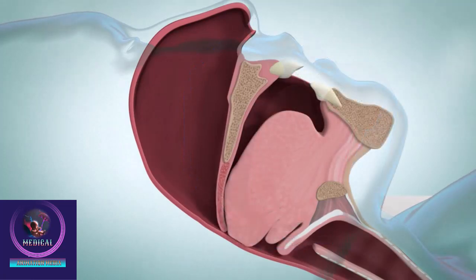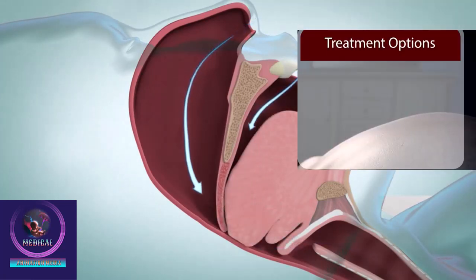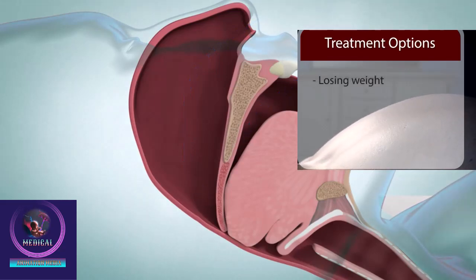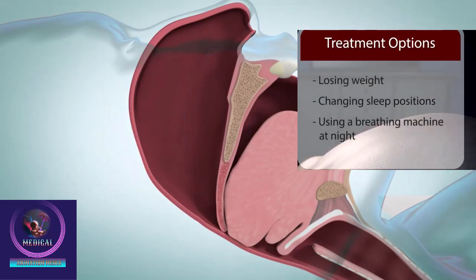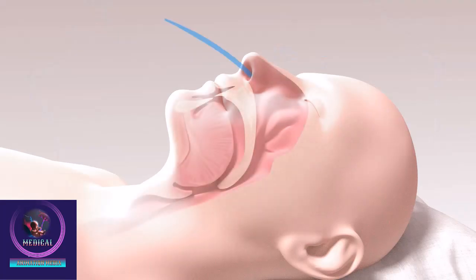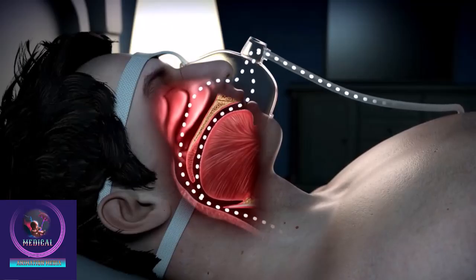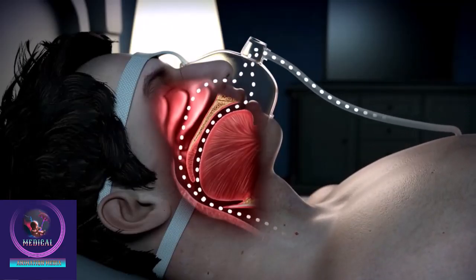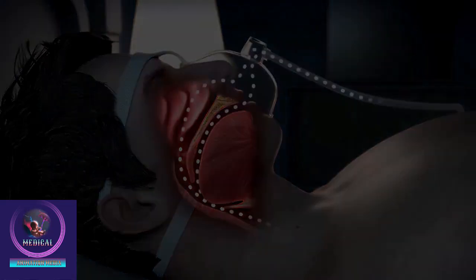Treatment for sleep apnea may include lifestyle changes, such as losing weight or changing sleep positions, or the use of a breathing machine at night. The most common breathing machine, called a continuous positive airway pressure, or CPAP machine, uses a hose and mask or nose piece to deliver a steady flow of air. This airflow helps keep the airway open and breathing regular.